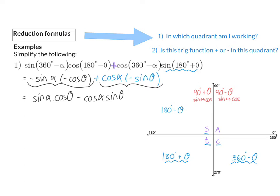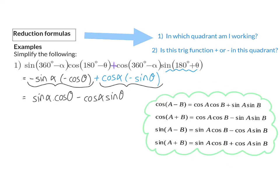Next, we identify the correct compound or double angle identity to simplify further. Even though these identities are given on your formula sheet in the exam, it's a good idea to know them by heart, as it makes recognizing them much easier. In example 1, we have the right-hand side of the compound angle identity, so we change it to the left-hand side: sin(α − θ).